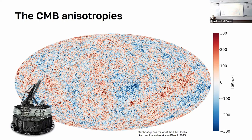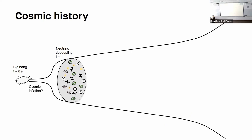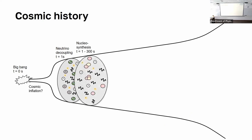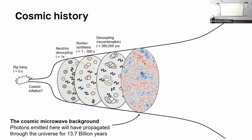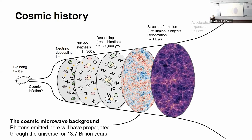That temperature variation is one of those things we can use to make theories about how the universe is structured. The Cosmic Microwave Background that we actually observe is basically an imprint of the state of the universe from about one million years since the Big Bang, and anisotropy in this intensity distribution reflects that.